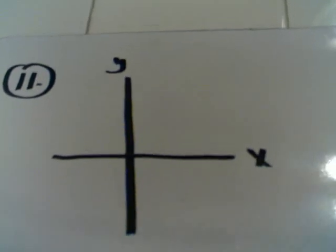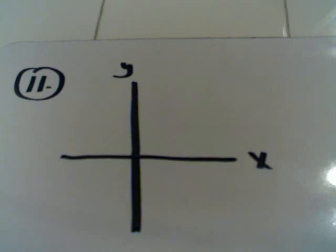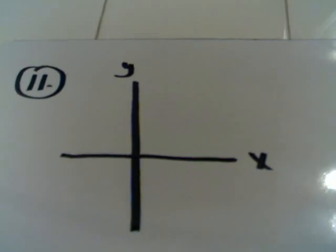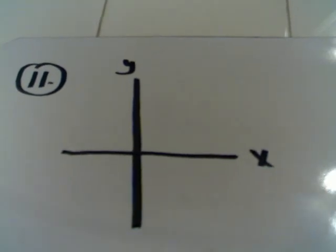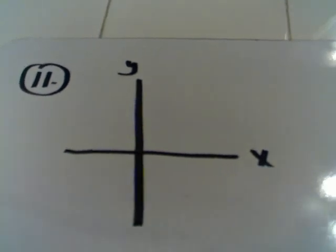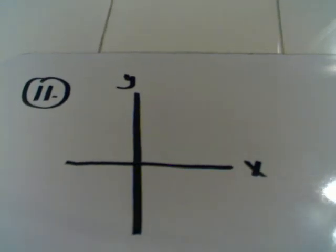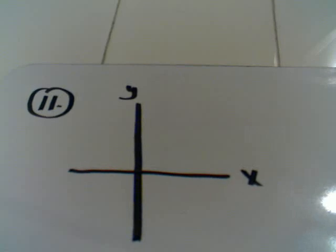Question number 11 asks us to draw a linear system whose solution set is the empty set. Now, what that means in English, a linear system, we're going to be dealing with two, in this case, graphs of two lines. And if the solution set is the empty set, that means the lines don't meet at all.